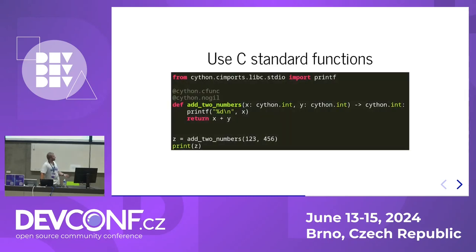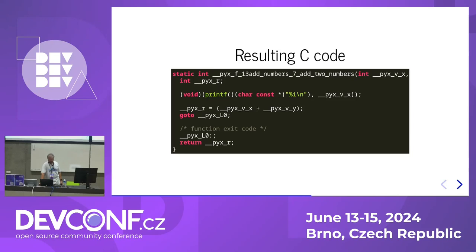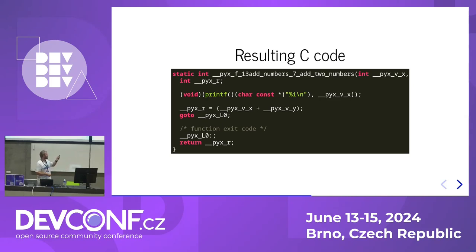This is the new Cython syntax — it's basically the same. And this is the resulting C code. If you want to see it, there are some magic names generated by Cython, but the code itself is optimal.